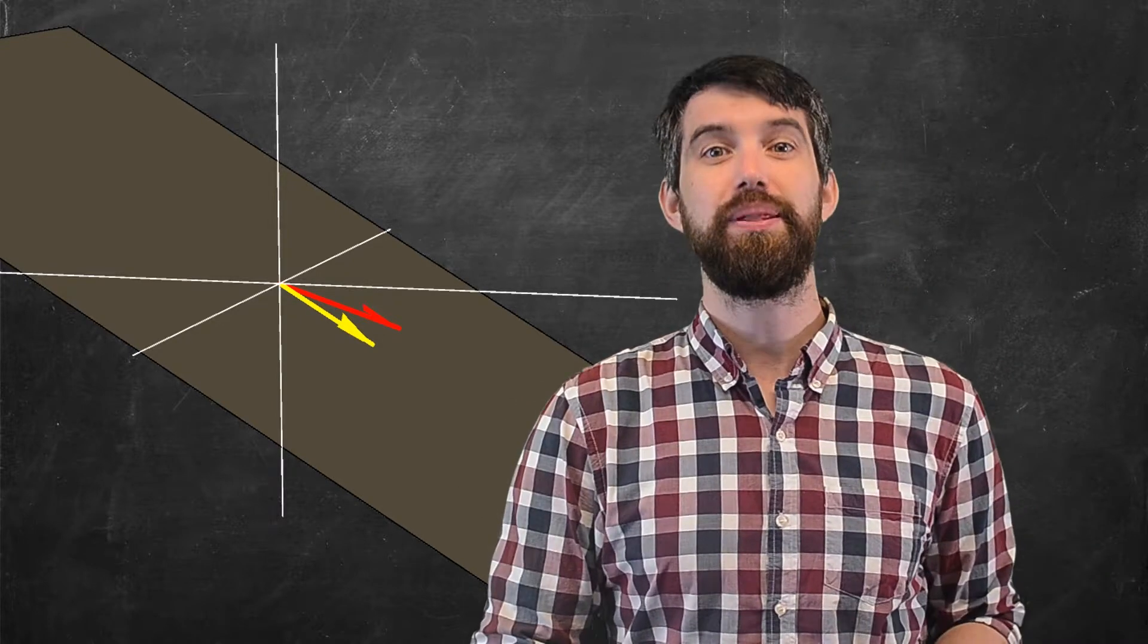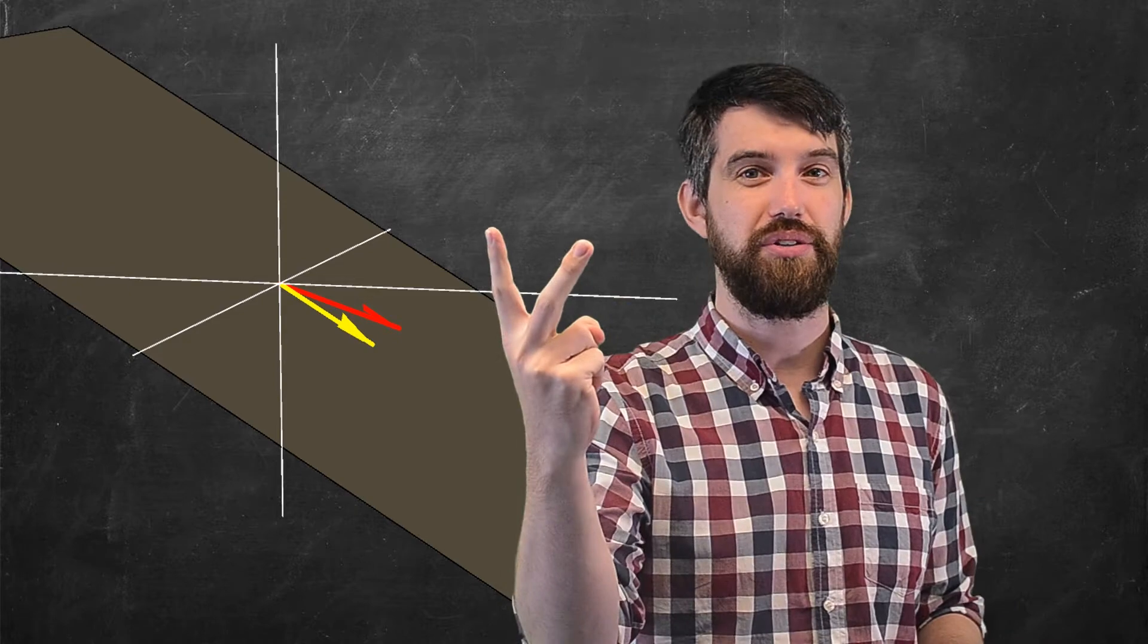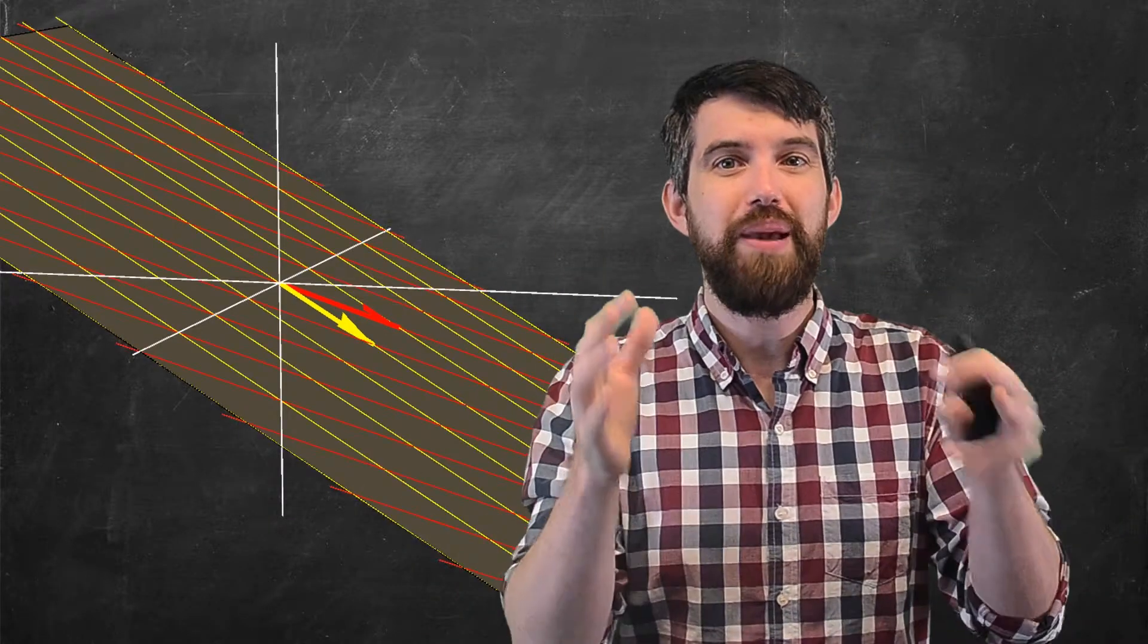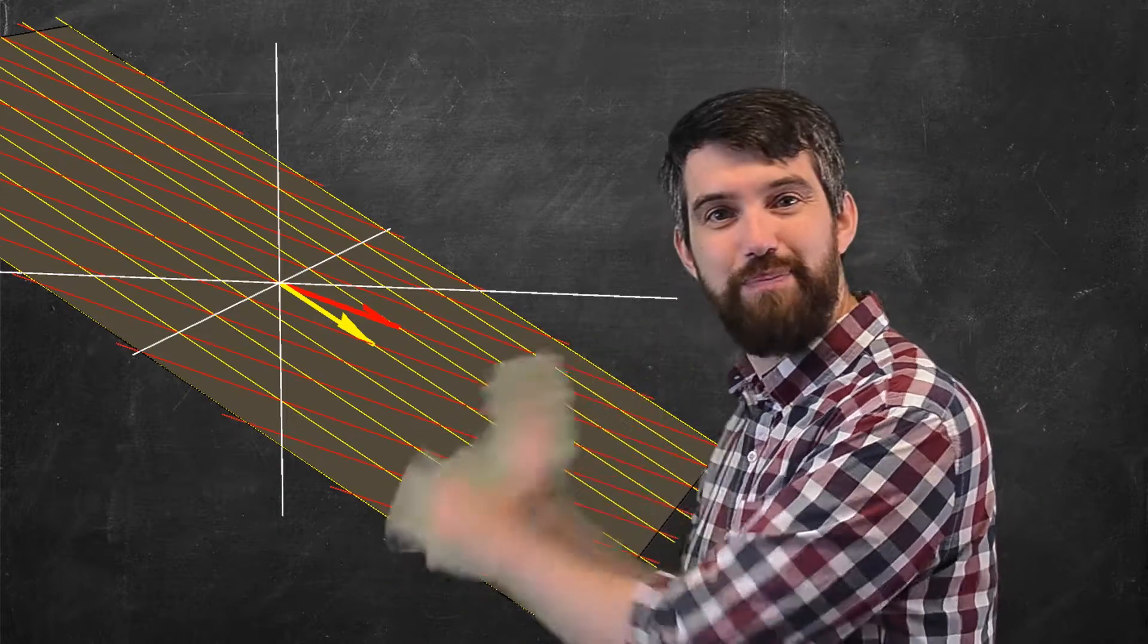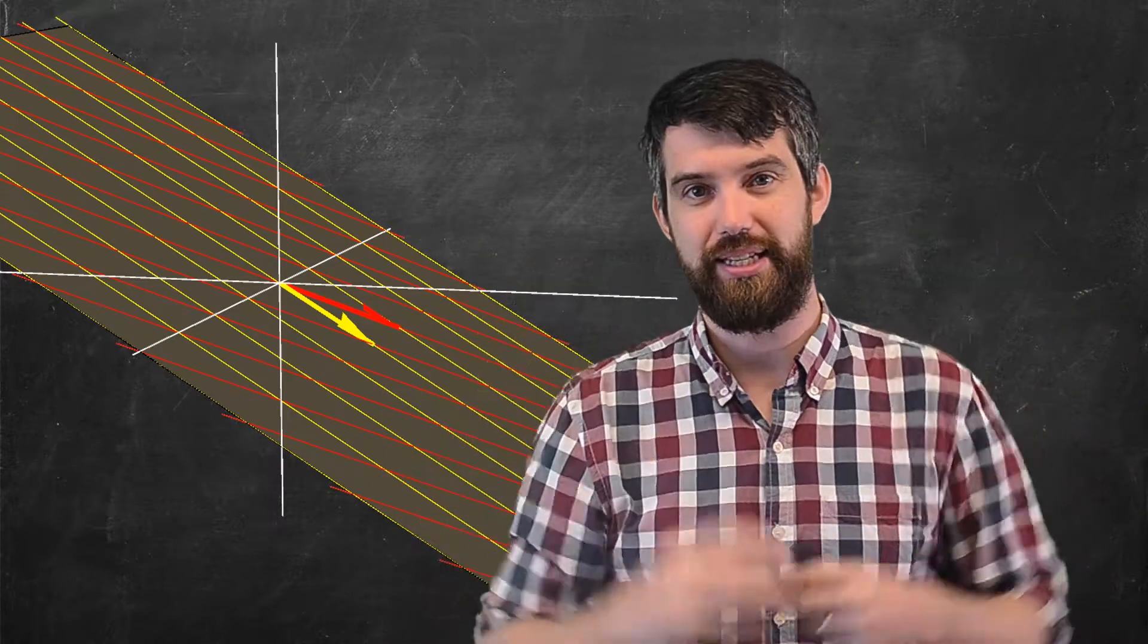Now, one of the key properties about this plane that we have here is that it has two basis vectors. It's got two different basis vectors, the red and the yellow. And these two different basis vectors, they come along and they span everything. And they make their own coordinate system. They make their own grid system.